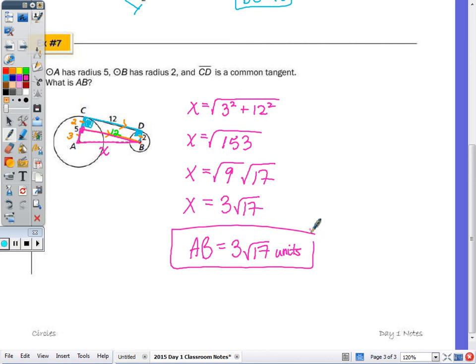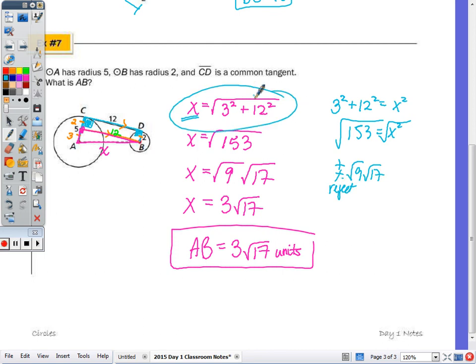I set it up as hypotenuse = √(leg² + leg²) rather than leg² + leg² = X², because that would eventually require taking the square root and showing both positive and negative solutions, then rejecting the negative. This approach saves that step since we can't have negative length.